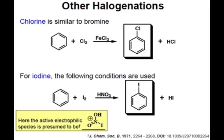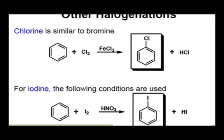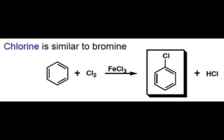Chlorine and iodine can also be used as electrophiles in electrophilic aromatic substitution reactions. The reaction of chlorine in the presence of a Lewis acid catalyst is identical to the bromination reaction. You should be able to draw out how chlorine reacts with iron trichloride to generate an electrophilic chlorine species, and also draw out the electrophilic aromatic substitution mechanism in which benzene reacts with this chlorine species.